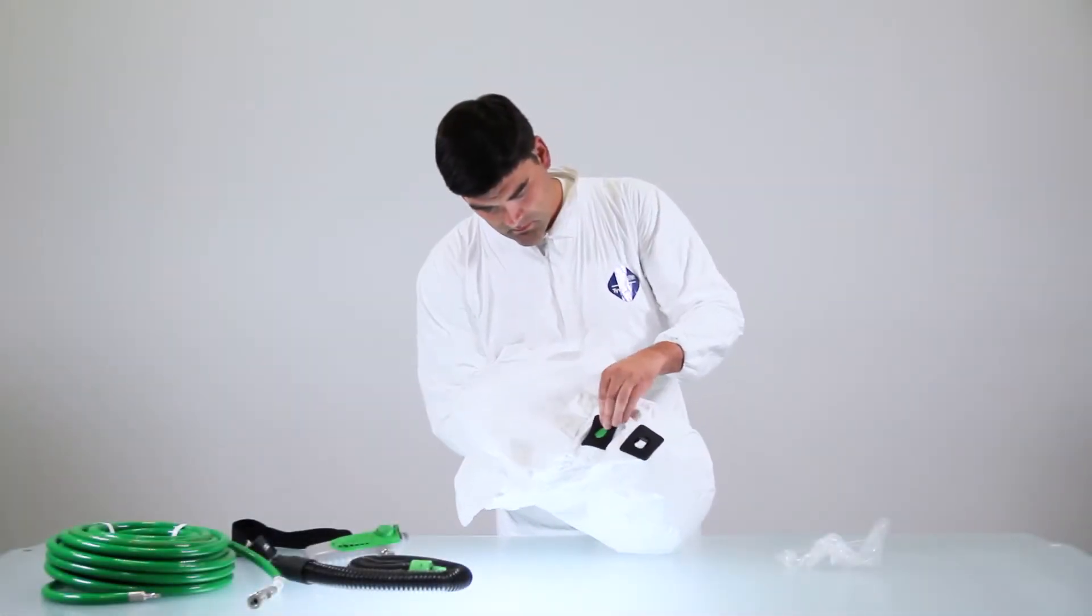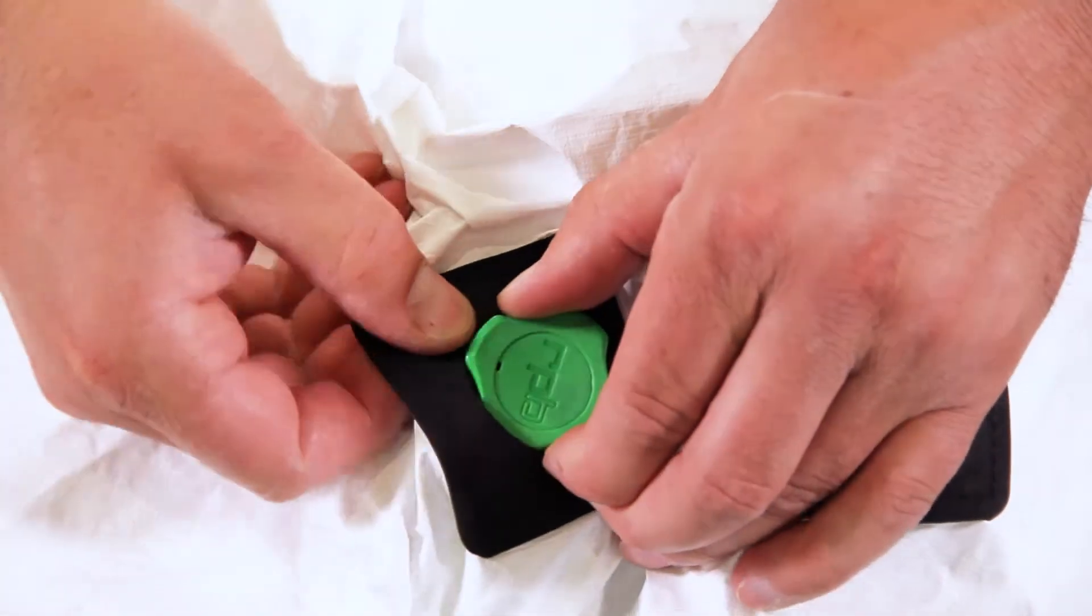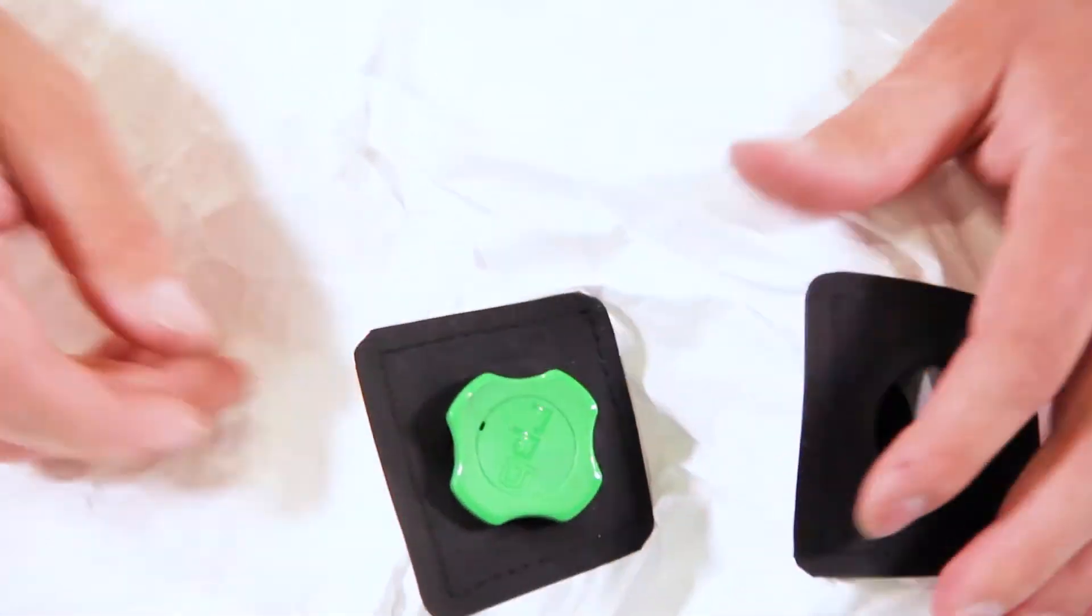If you are using a Tychem QC or Zytec FR hood, pull the ratchet through the bottom hole in the back of the hood.